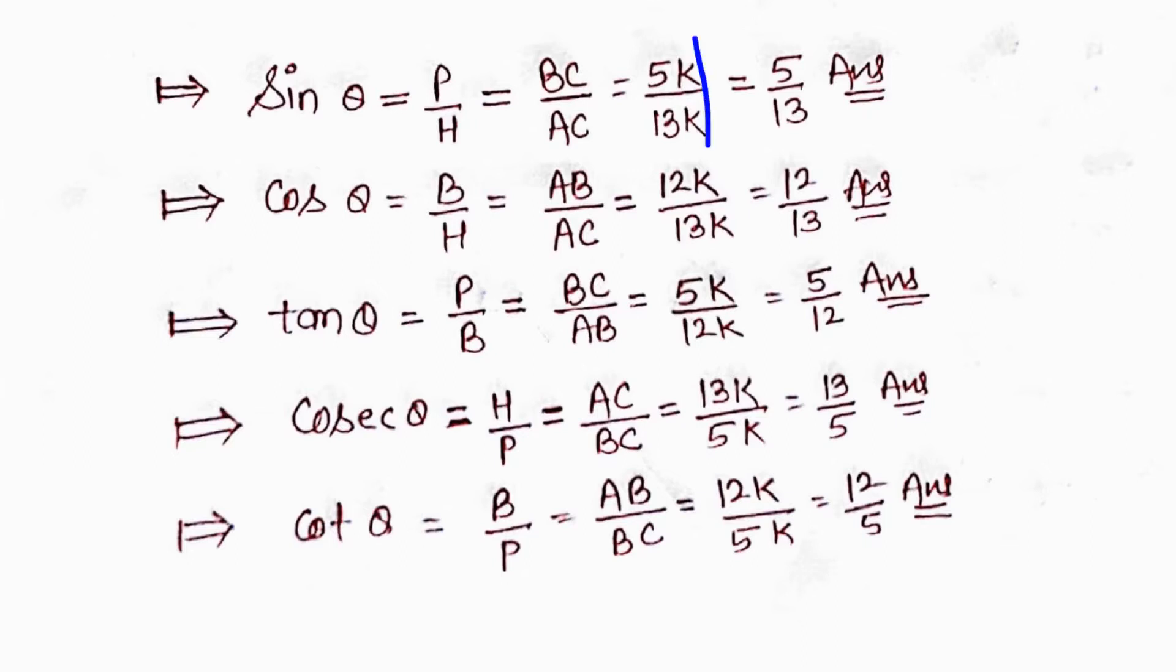Next, cos θ = B/H = base/hypotenuse = AB/AC = 12K/13K = 12/13.